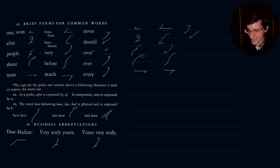Should. Over. And notice the sign for the prefix over, written over a following character, is used to express the word over. Okay. Over. Then we have ever. And finally, every. So those are the brief forms that are discussed here in chapter 41, or at least presented.